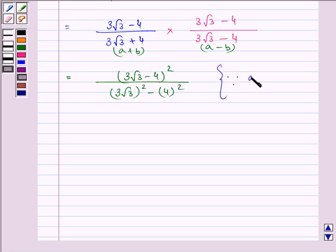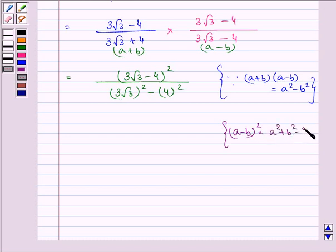This is because a plus b into a minus b gives us a square minus b square. And we know that a minus b the whole square is equal to a square plus b square minus 2ab.